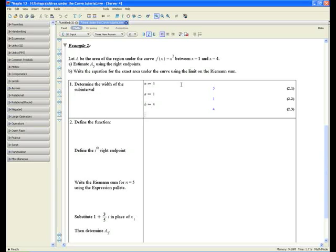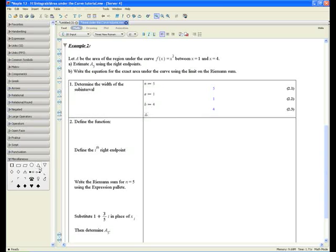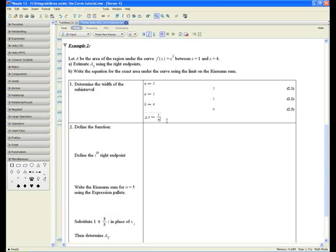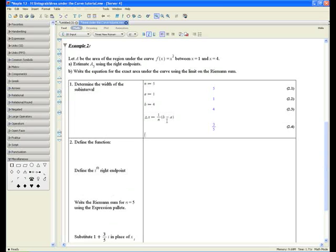b equals 4. The width of the subinterval can be denoted by delta x. You can find the delta in the miscellaneous palette. Click on the delta and type in x and define it to equal 1 over n, right arrow, b minus a, close bracket, enter. And so the width of the subinterval is 3 fifths.